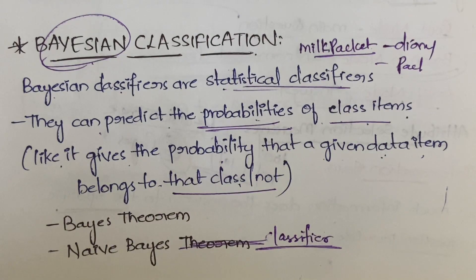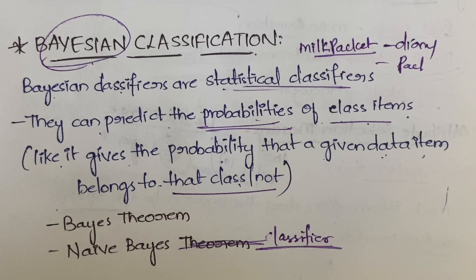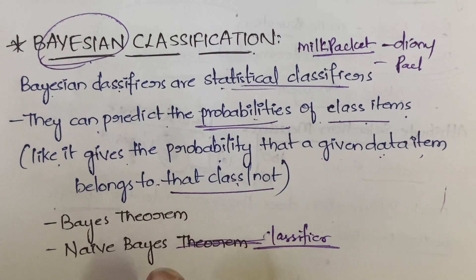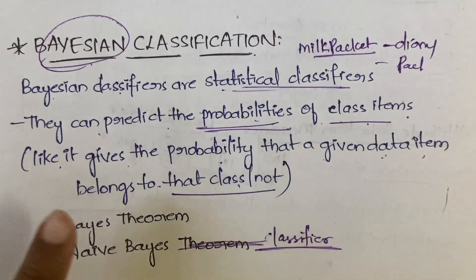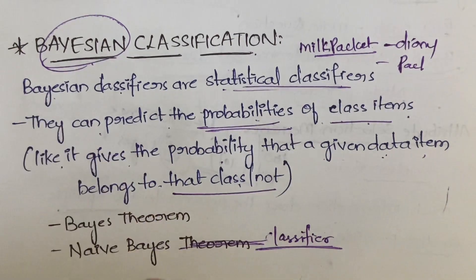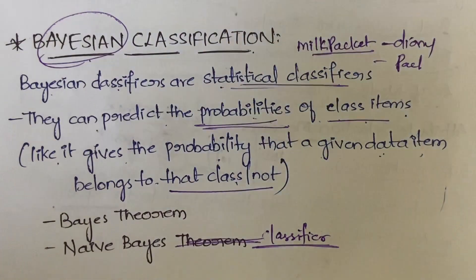That is about Bayesian classification. Under Bayesian classification, we have Bayes classifier. In order to understand Bayes classifier, you have to first know what is Bayes theorem, conditional probability and all. So once you understand the Bayes theorem, then you will understand the Bayes classifier.